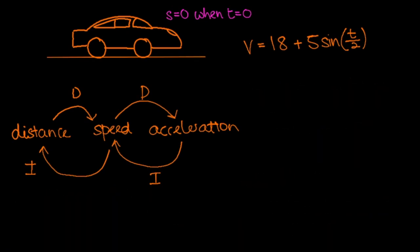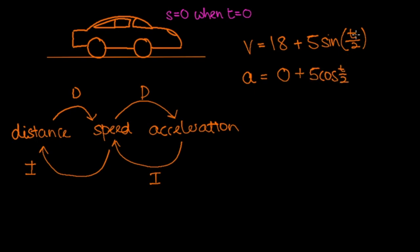Let's finish by deriving the formula for acceleration of the car at time t. We have speed as a function of time, so to find acceleration we differentiate. The derivative of the constant 18 is 0, and the derivative of 5 sine t over 2 is 5 cosine t over 2 times the inner derivative, which is a half. So the acceleration of the car is given by 5 over 2 cosine t over 2.